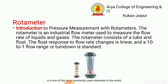Now we discuss the Rotometer. A Rotometer is a device that measures the volumetric flow rate of a fluid in a closed tube using pressure measurement. The Rotometer is an industrial flow meter used to measure the flow rate of liquids and gas, and it consists of a tube and float. The float response to flow rate change is linear, and a 10 to 1 flow range or turndown is standard.